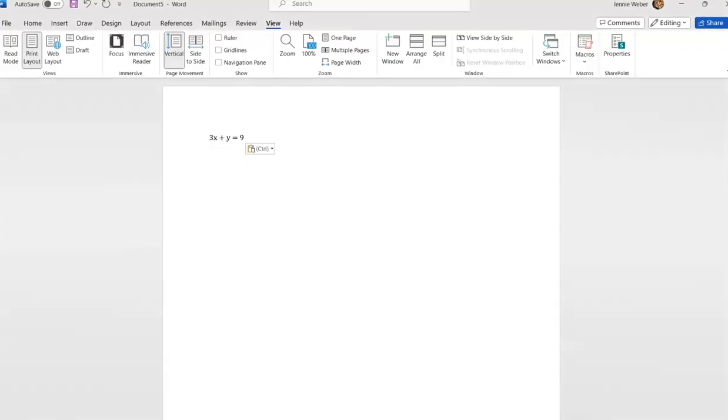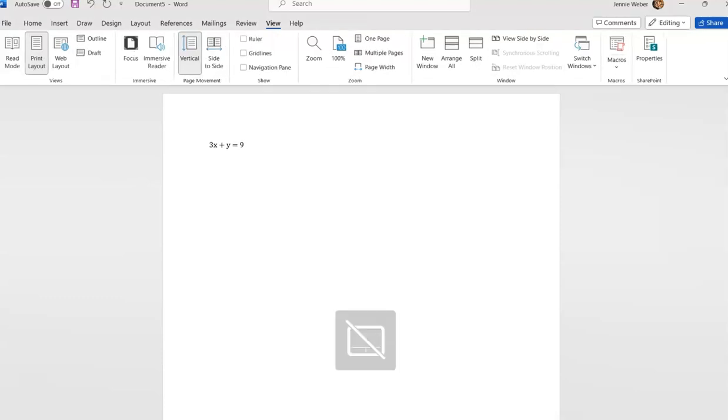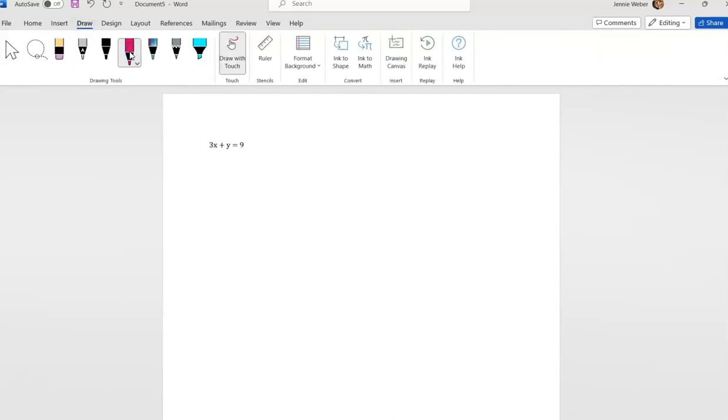We're going to graph this equation and we're going to use our slope-intercept form to help make this easy. First thing you're going to do is rewrite this into slope-intercept, and slope-intercept is y equals mx plus b.